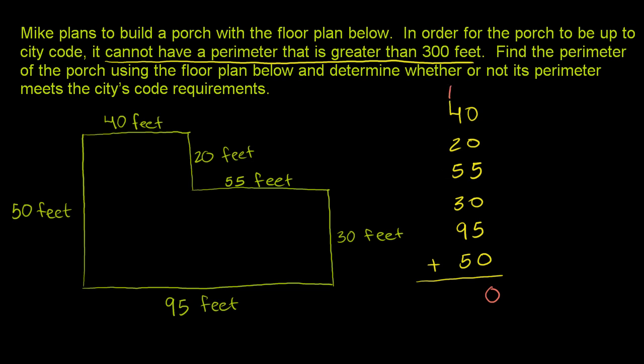And now we add up all of the tens places. So we have 1 plus 4 is 5, plus 2 is 7, plus 5 is 12, plus 3 is 15, plus 9 is 24, plus 5 is 29.